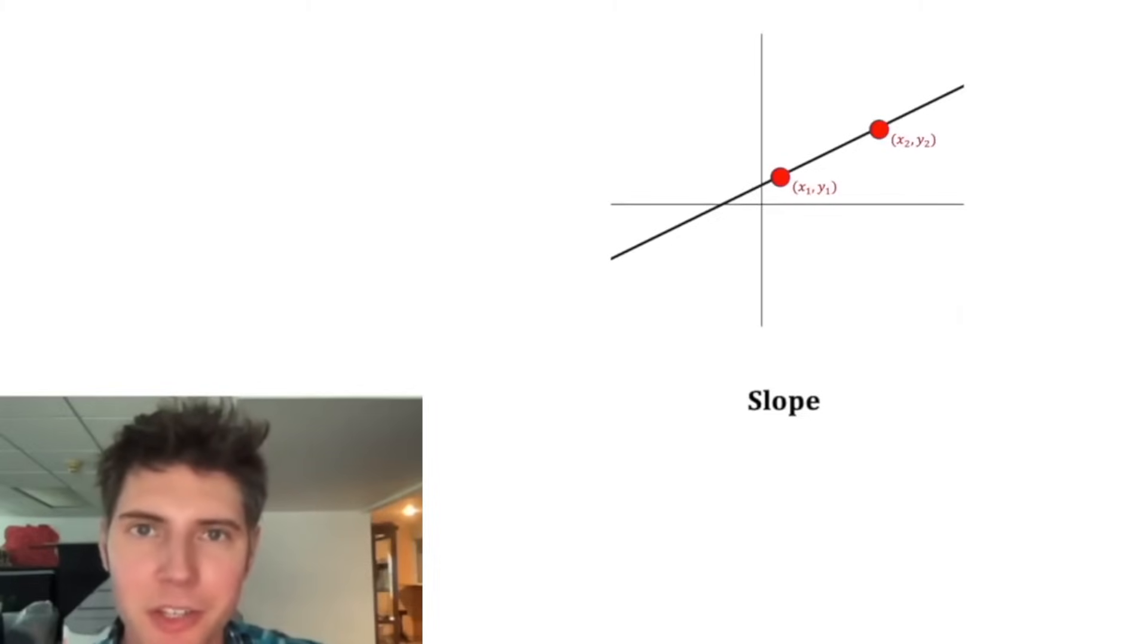We'll pick another point, x2, y2. How much did we rise and how much did we run? We now have a valid way to measure the steepness, rise over run. This rise is whatever the height of this point is minus the height of this point. That's y2 minus y1. And this run is however far over this point is minus however far this point is. So that's x2 minus x1.